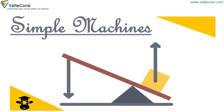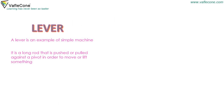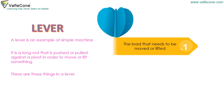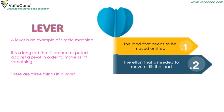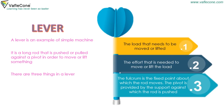A lever is an example of a simple machine. It is a long rod that is pushed or pulled against a pivot in order to move or lift something. There are three things in a lever: the load that needs to be moved or lifted, the effort that is needed to move or lift the load, and the fulcrum — the fixed point about which the rod moves.